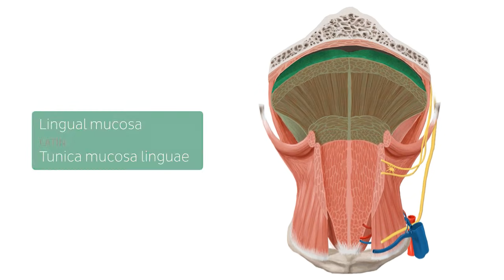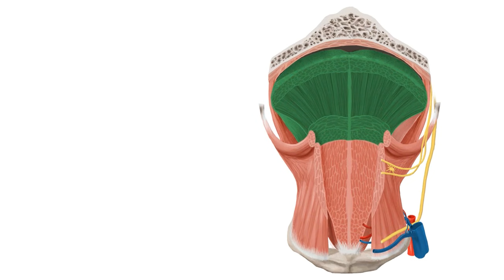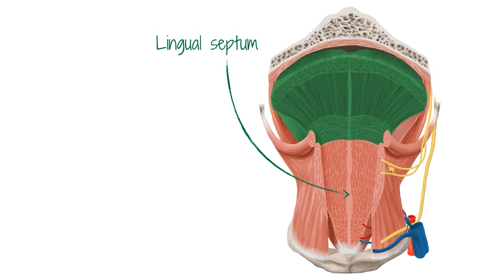In the next image we can see all of the tongue highlighted in green. It is separated into left and right halves by the vertical lingual septum, which underlies the median sulcus and continues down to attach to the hyoid bone. The tongue consists of eight pairs of muscles which are located bilaterally on either side of the lingual septum.